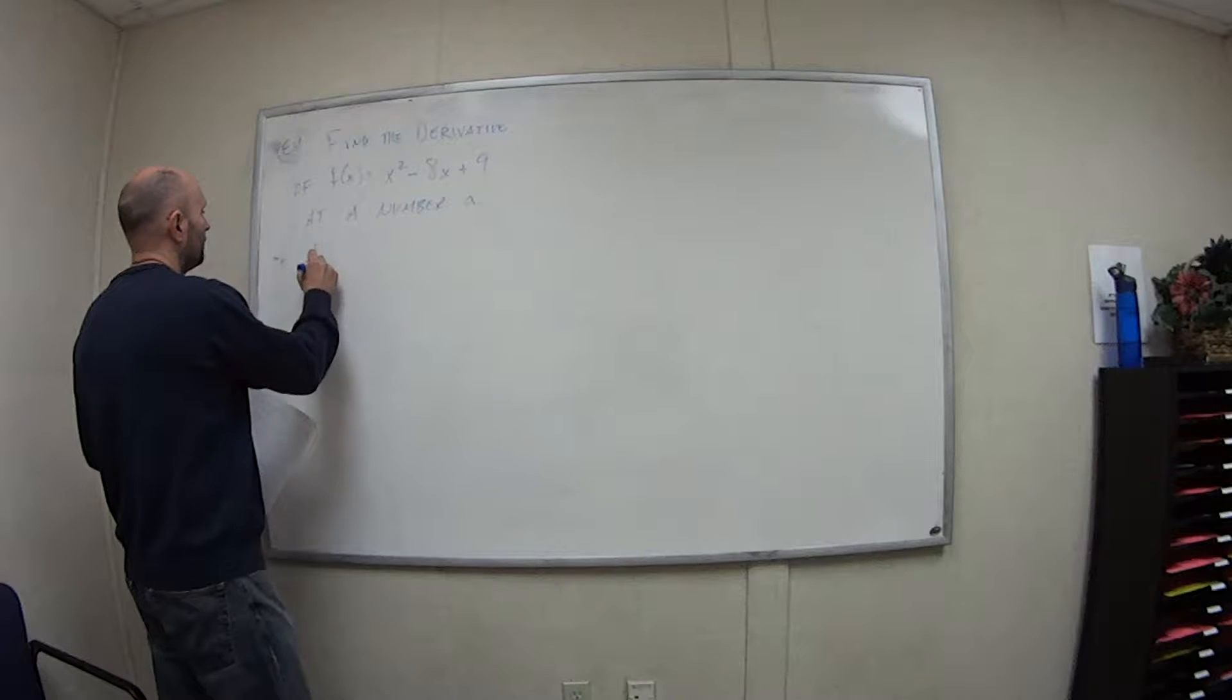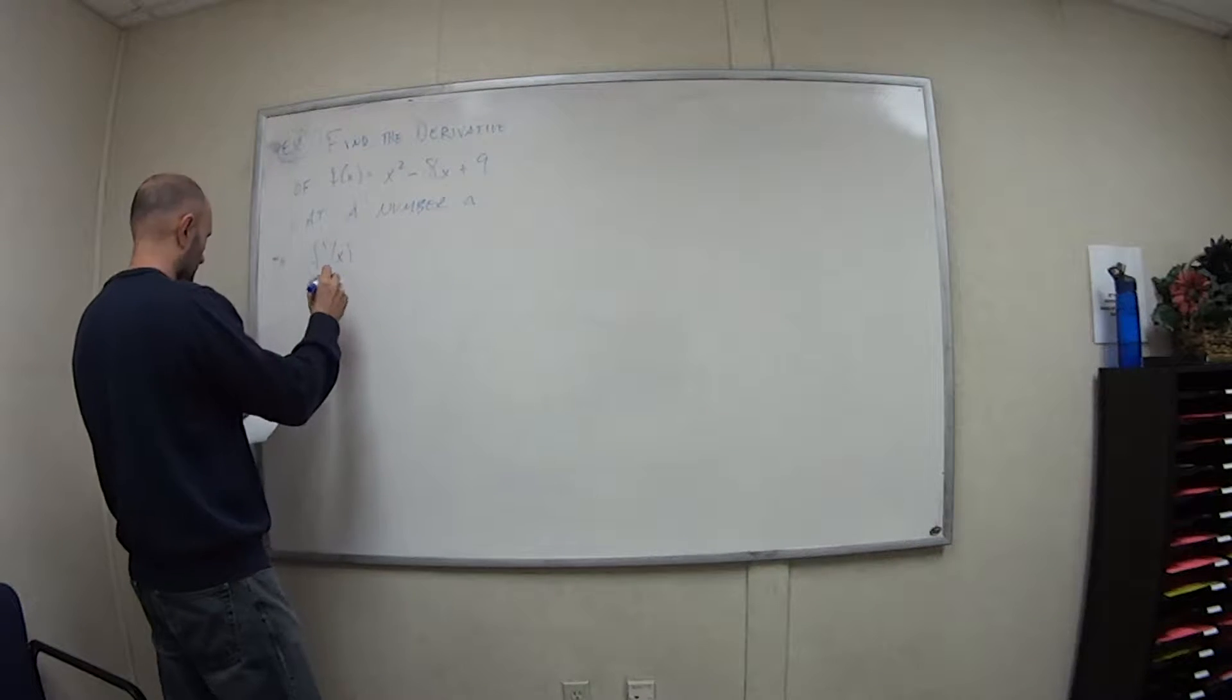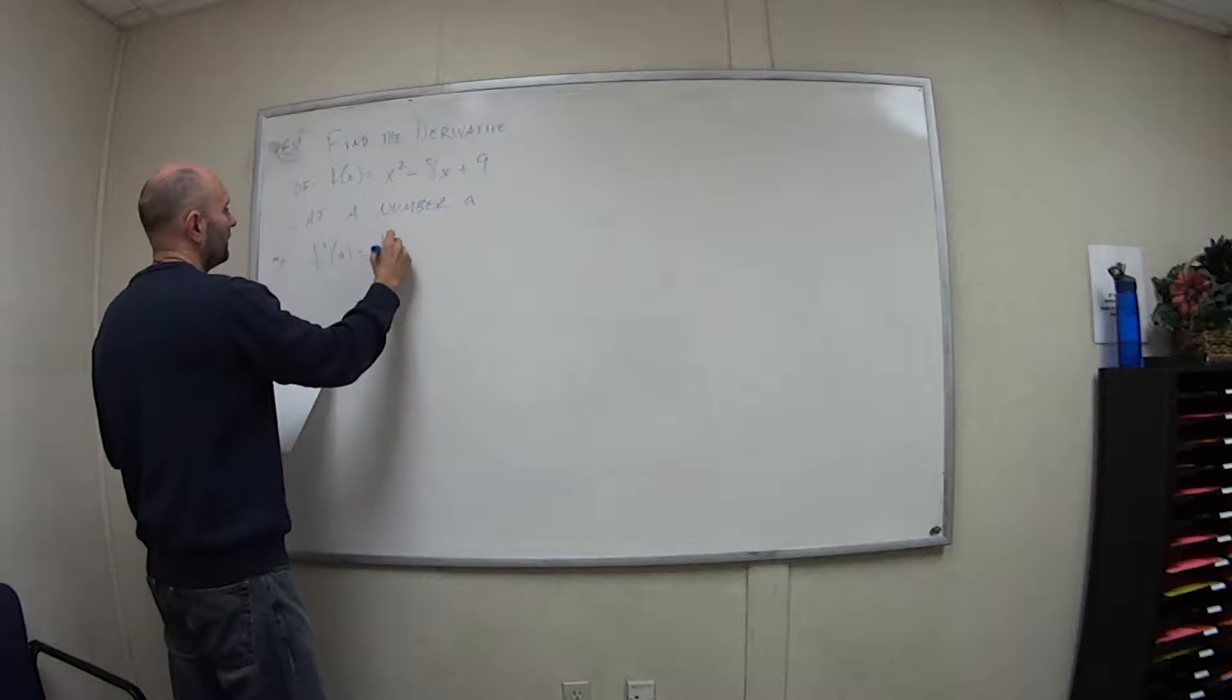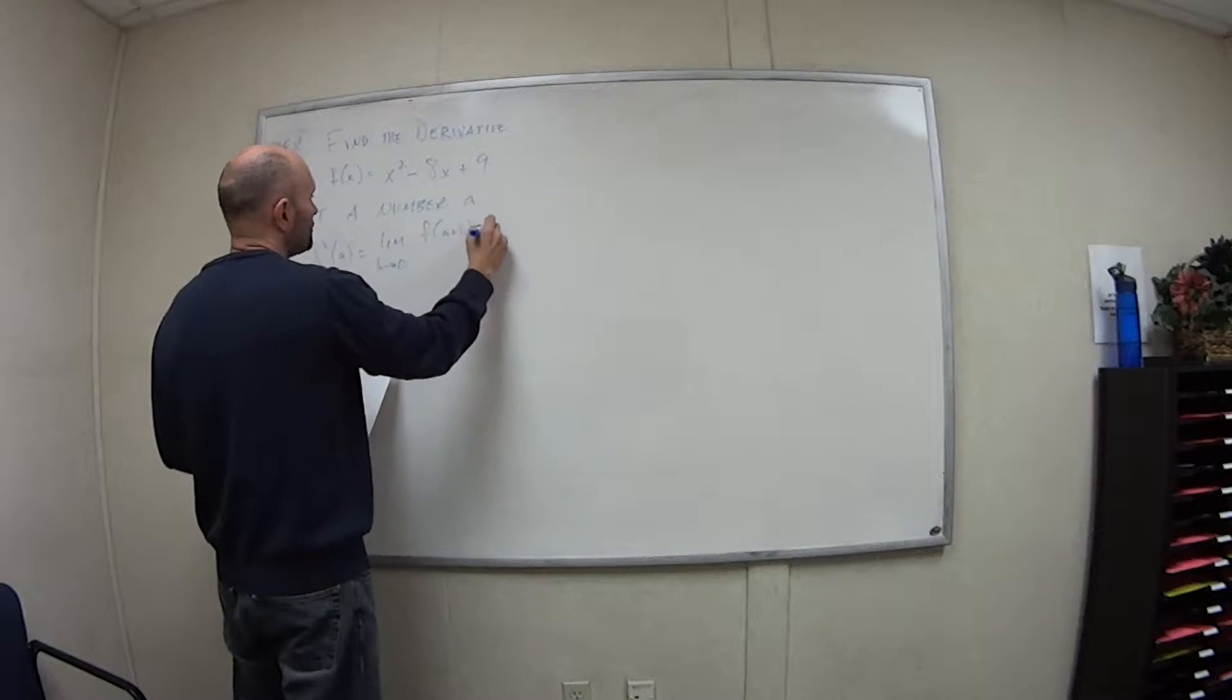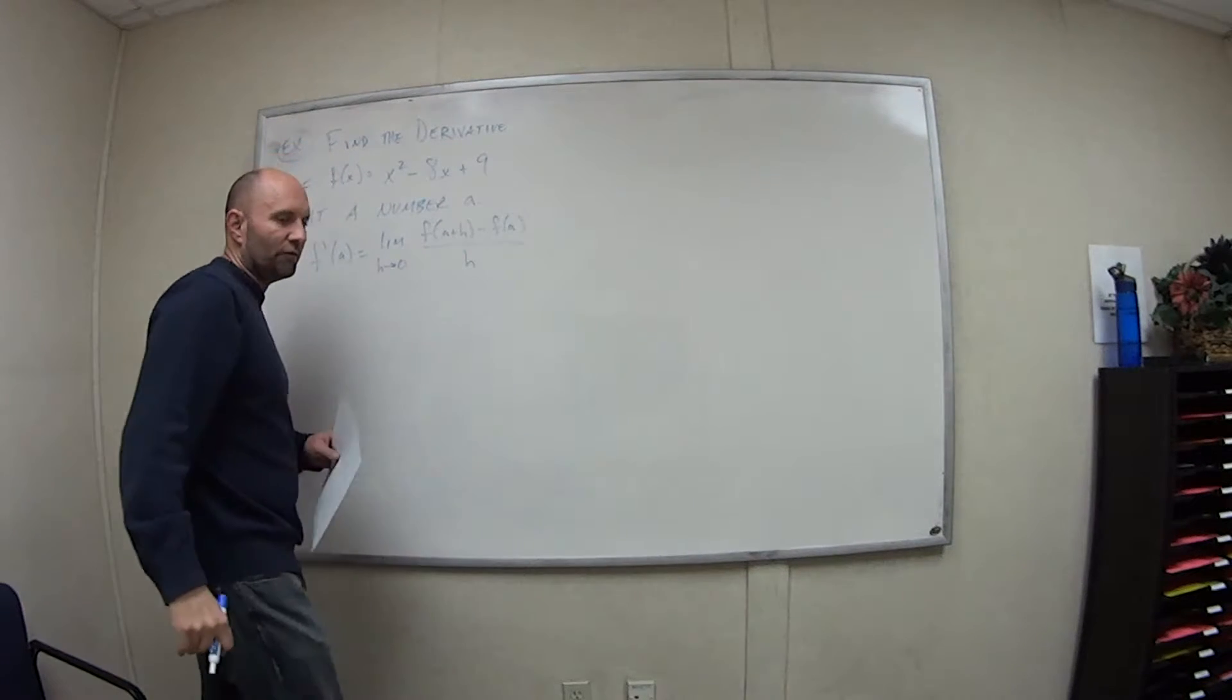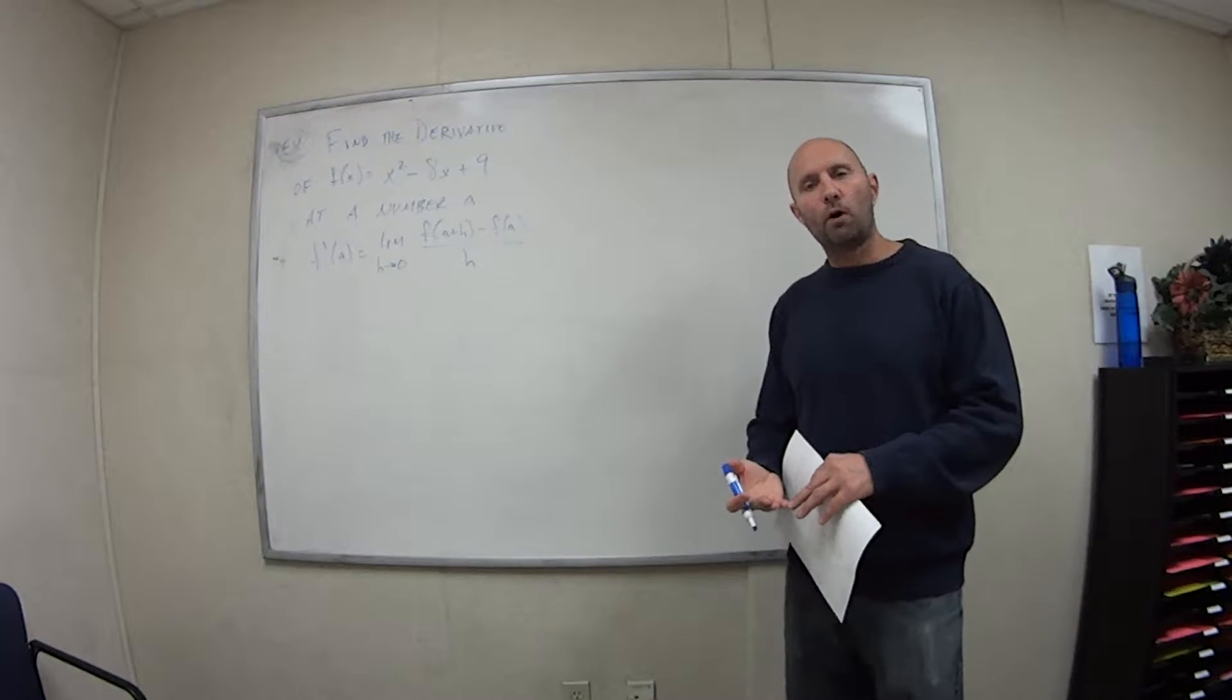So this is that formula we had: f prime of a is the limit as h goes to 0, f of a plus h minus f of a all over h. So here's a chance for you to practice. Go ahead and hit pause.